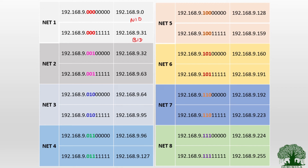The given address space is now divided into eight subnets. For the first subnet, net ID is 9.0 and broadcast ID is 9.31. Even though only five subnets are needed, we cannot divide the address space into exactly five — we must use eight, which is the logical subdivision. The table can be calculated for the remaining networks accordingly.